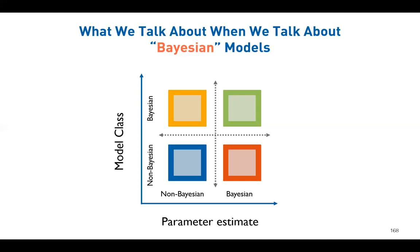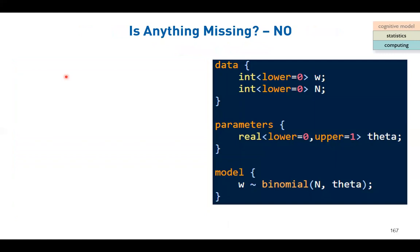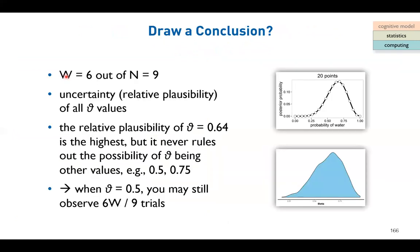Besides wanting to claim there is no difference between groups, the uncertainty part is really unique to the Bayesian approach. If you want uncertainty around any parameter estimation, this is the only way to go. There are some other advantages I can tell you later.